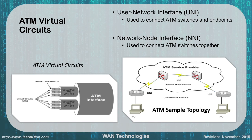With ATM virtual circuits, we have the user network interface, the UNI, and the network node interface, the NNI. The UNI is used to connect ATM switches and endpoints together. The NNI is used to connect the switches together themselves. As you can see in the diagram in the bottom right, the router to switch connection is UNI and the networks are connected through NNIs. Each has a virtual circuit identifier — the VPI and VCI. Each VCI is indicative of a customer and the VPI is the path going to and from multiple customers.